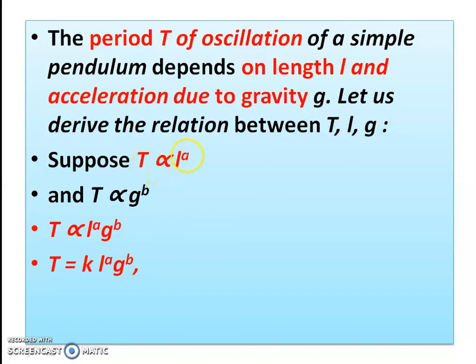We write that T is directly proportional to L raised to some power a, and T is directly proportional to g raised to some power b. We want to find the values of a and b. Therefore, in general, we write T is directly proportional to L raised to a times g raised to b.